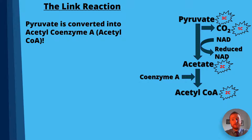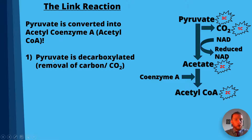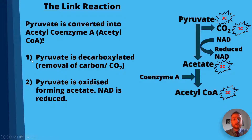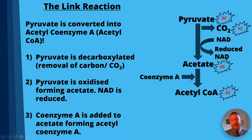Pyruvate is converted to acetyl coenzyme A in three steps, shown in the diagram with pyruvate at the top and acetyl coenzyme A at the bottom. First, pyruvate is decarboxylated — that's where we remove a carbon from the molecule, seen here as the removal of carbon dioxide. Next, pyruvate is oxidized, where it loses protons or electrons; NAD is reduced, meaning the pyruvate is oxidized. Finally, coenzyme A is added to the acetate to form acetyl coenzyme A.